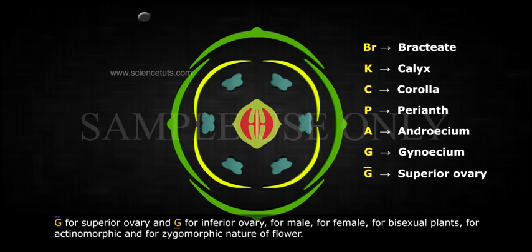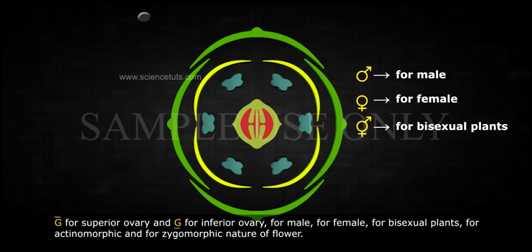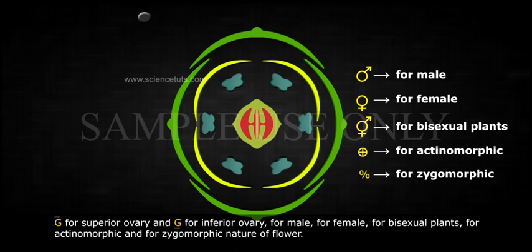G with a line below for superior ovary, and G with a line above for inferior ovary. Symbols indicate male, female, or bisexual plants, and actinomorphic or zygomorphic nature of the flower.